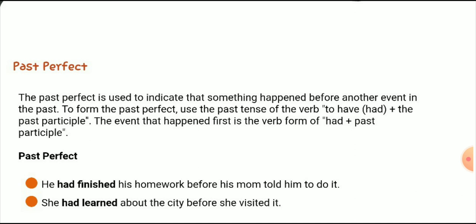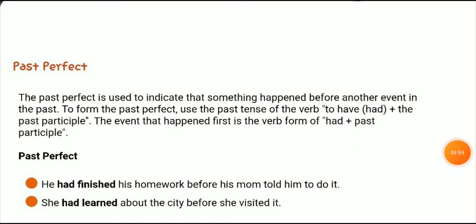For the interrogative sentence, we use 'had' — taken from the formula — plus the subject, then the past participle, then the object. For example: 'Had he played football?' For the negative interrogative sentence, we place 'not' after the subject, and the remaining formula stays the same as the interrogative sentence.